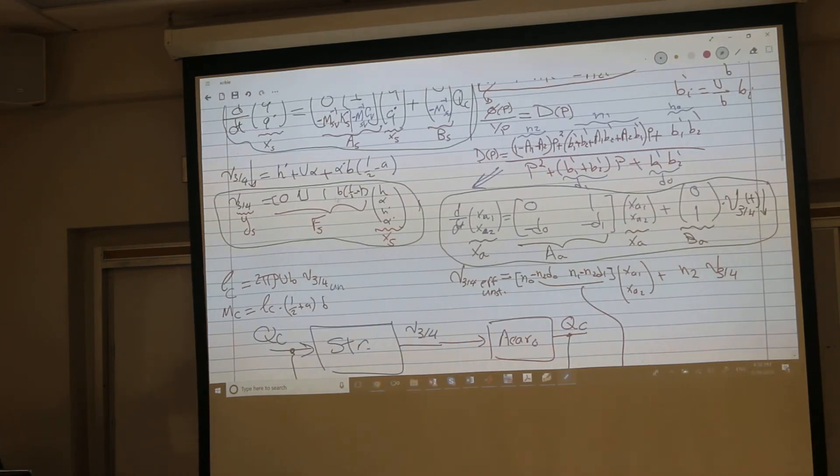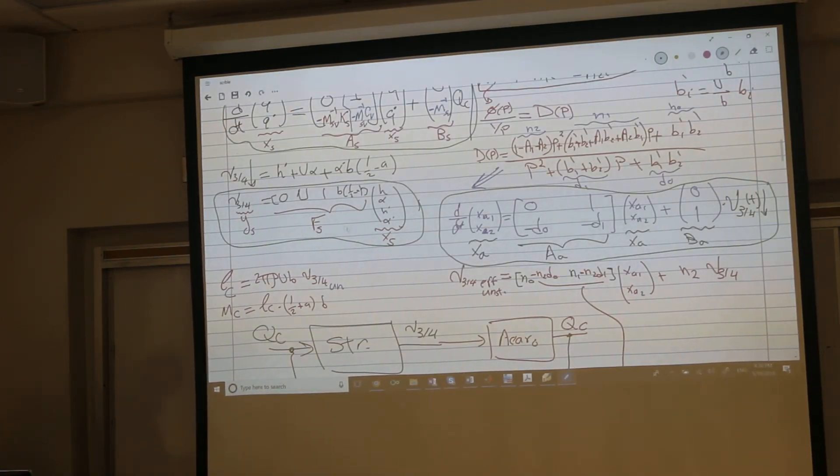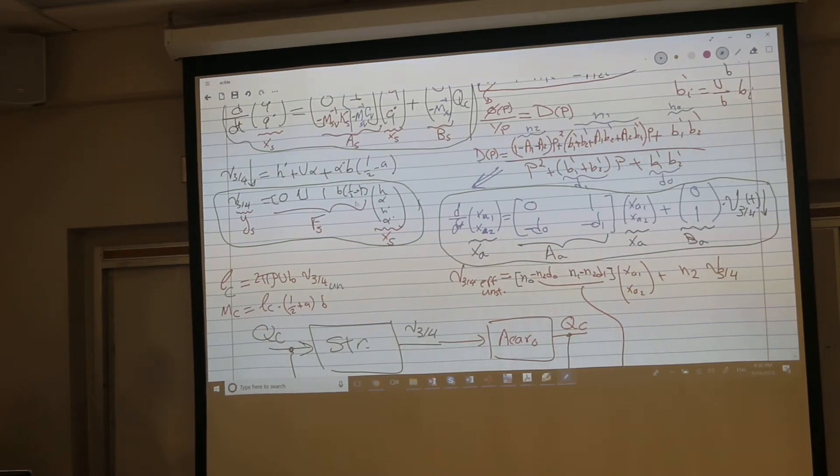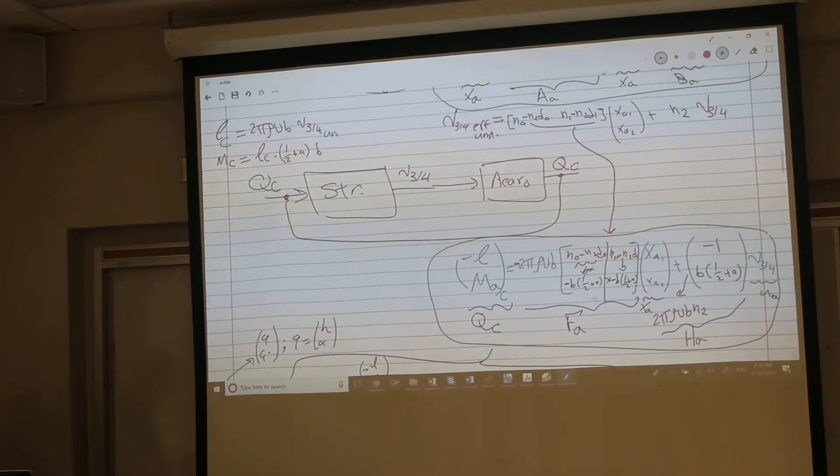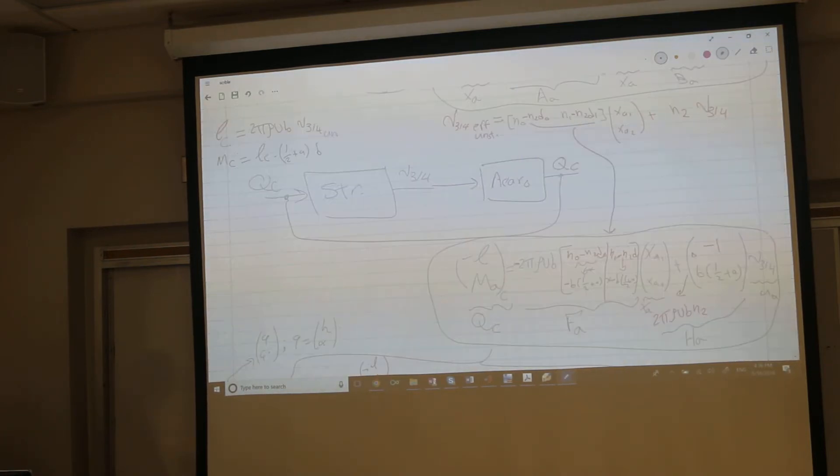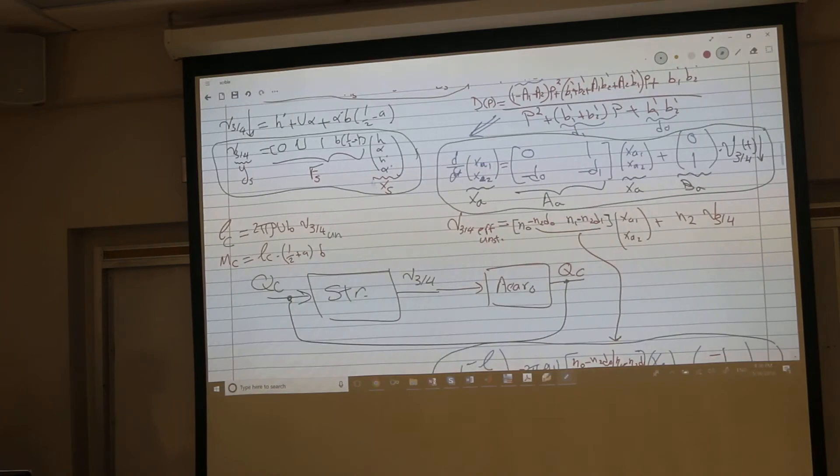We derived it's just f structure times x structure. Can you tell me a physical meaning why we did not find an h here? In the aerodynamics there is an h, f times x plus h. In the structure, there is no h.